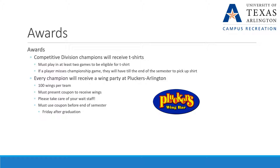The awards for champions include a t-shirt for the competitive division champions and a wing party. To be eligible for a t-shirt, a player must play in at least two games including the playoffs. If a player misses the championship game but played in two games throughout the season and playoffs, they can come to the intramural sports office to pick up their shirt as late as the end of the semester. Each team will also receive a wing party at Pluckers in Arlington — 100 wings per team. You must present the coupon and use it before the end of the semester, defined as the Friday after graduation. Please tip the staff as if you were ordering 100 wings.